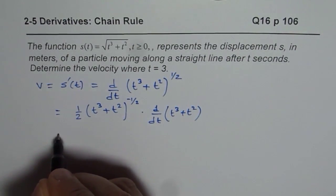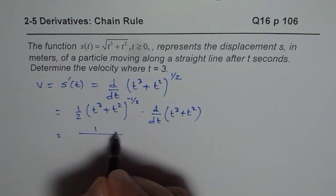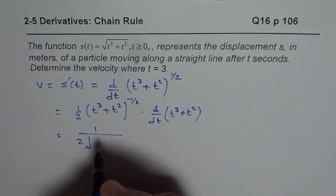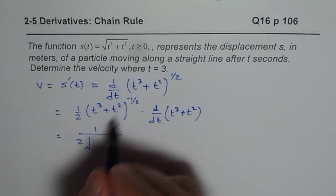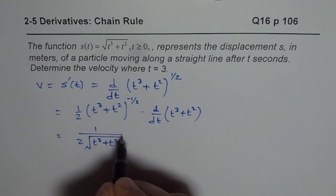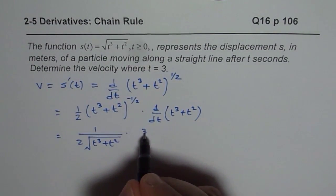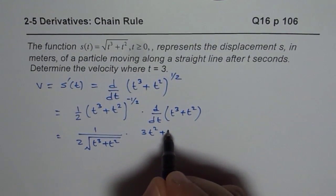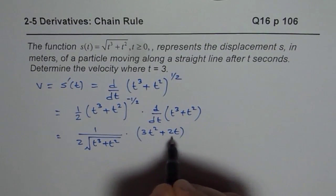That gives us 1 over, let me rewrite this as square root of t cube plus t square, times the derivative here is 3t square plus 2t. Place brackets otherwise you may do a mistake.